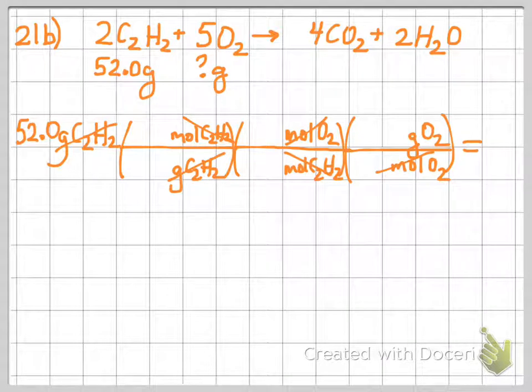Our first conversion factor here is molar mass. The easy number is one in front of moles. And our mass for acetylene hasn't changed. It's still 26.04. Our mole ratio, our numbers come from our coefficient. So we have a 5 and a 2.